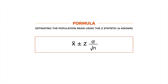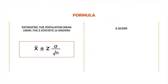The estimation formula for the population mean is derived from the Z-score formula. It contains all the same elements: X-bar, Z, standard deviation, and the square root of N. However, instead of solving for the Z-score, we are now finding the actual values located in a particular portion of the normal distribution.